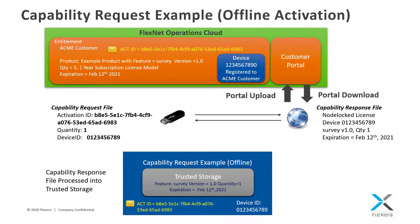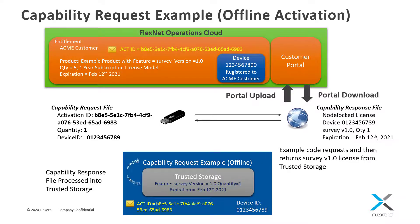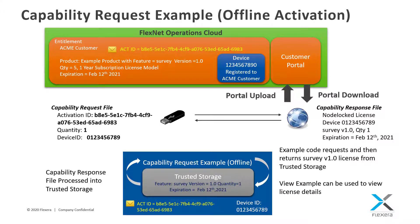From this point on, there is no difference between online and offline activation. The example will again perform a license request for the survey feature from trusted storage, followed by a license return back to trusted storage. The view example can then again be run to view the details of the licenses in trusted storage.